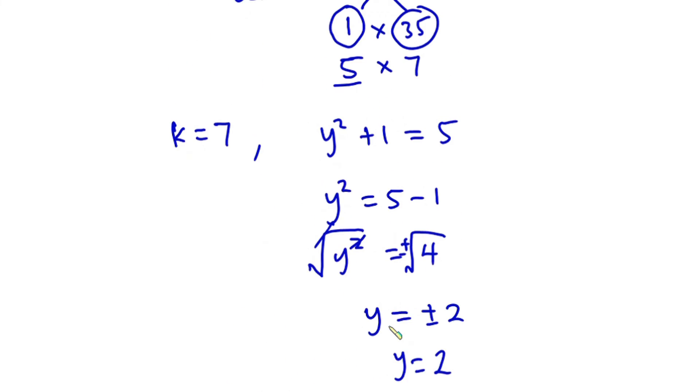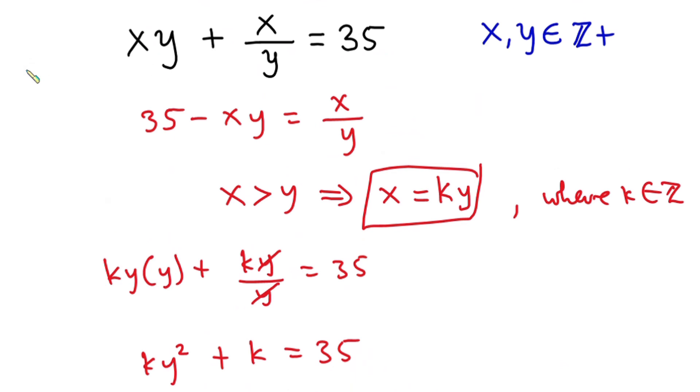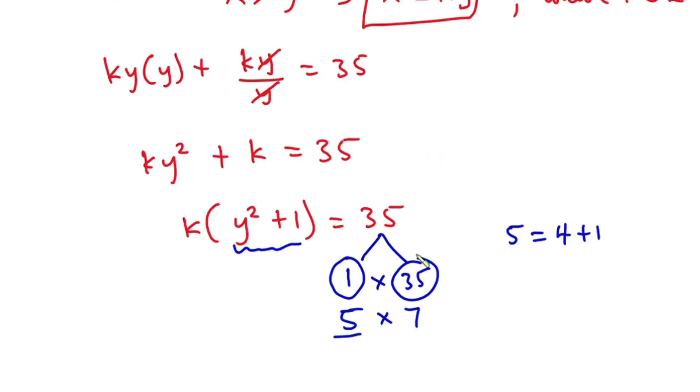Now let's check our answer. We have 14 times 2 plus 14 divided by 2, and this must be 35. We know that 14 times 2 is 28, then plus 14 divided by 2 is 7, and 28 plus 7 is 35. So you can see that the left-hand side equals the right-hand side.